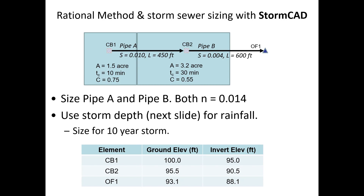We're going to assume the grate can capture all the flow from the parking lot — that this is a low point in the watershed and all water ultimately gets into that catch basin. In reality, if a grate is along a sloped road, the water may flow over it and only a fraction gets through; inlets aren't always 100% efficient. We also have ground elevation and invert elevations needed. The slope is not specified directly in StormCAD; instead it's determined from the pipe length and invert elevations at each end.